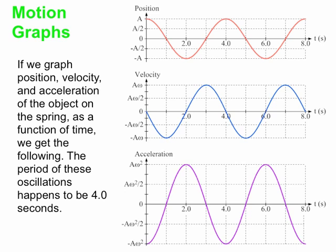If you graph position, velocity, and acceleration as a function of time for an object such as a block on a spring oscillating, you're going to get things that look like cosine curves and sine curves. It's a neat relationship. The force is opposite in direction to the displacement and proportional to that displacement, and this gives us those lovely sine and cosine graphs for position, velocity, and acceleration as a function of time.